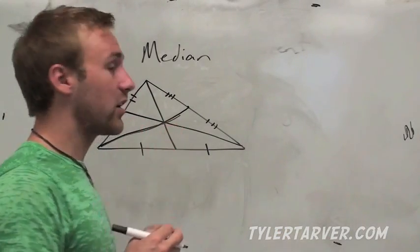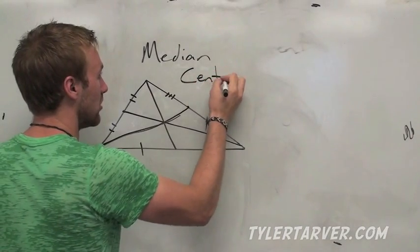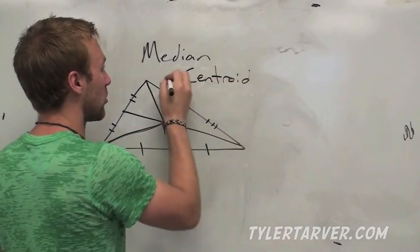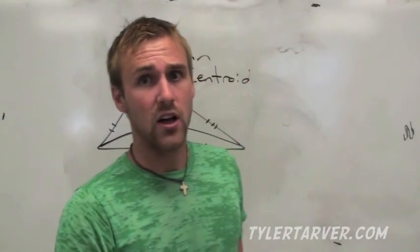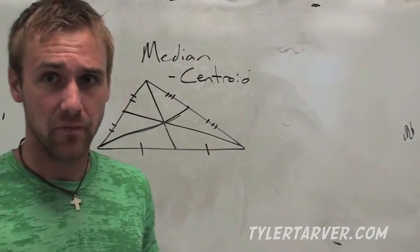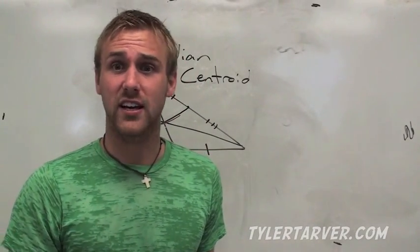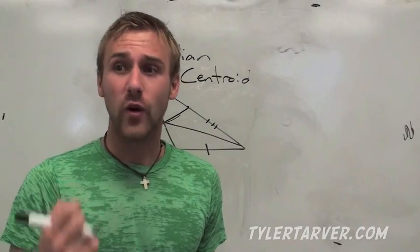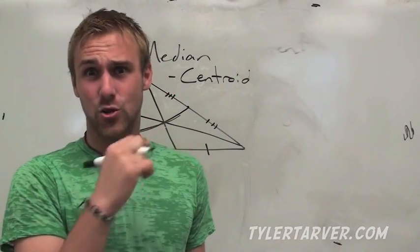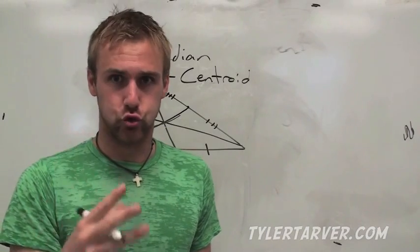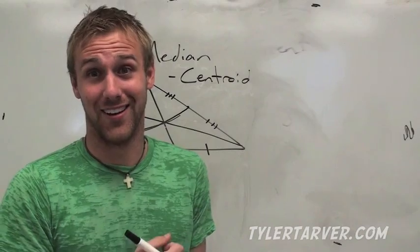Medians hit. Their point of concurrency is called the centroid. That's that point, that's what that's called where they hit. It's called the centroid of the triangle. That only applies to when the medians hit. Now this is the way I like to remember centroid. Centroid sounds like it was something straight off of a Transformers movie. Transformers turn into cars and they drive on the road where they cross the median. Median, Transformers, centroid.